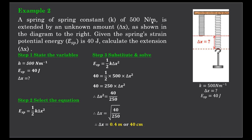So the spring of spring constant 500 newtons per meter, when it has a strain potential energy of 40 joules, must have been extended by a distance of 40 centimeters or 0.4 of a meter.